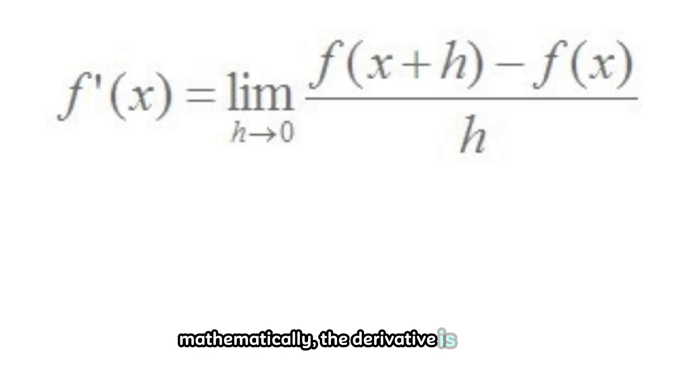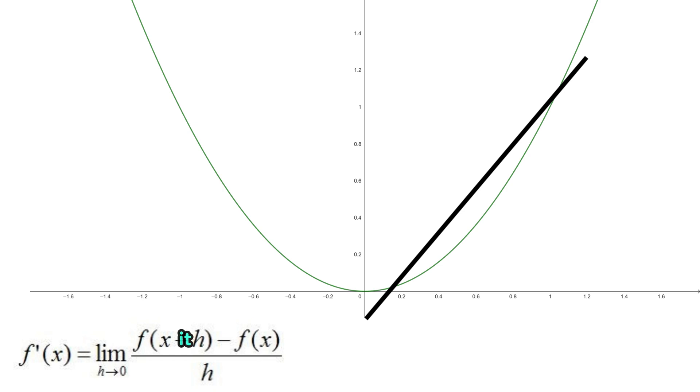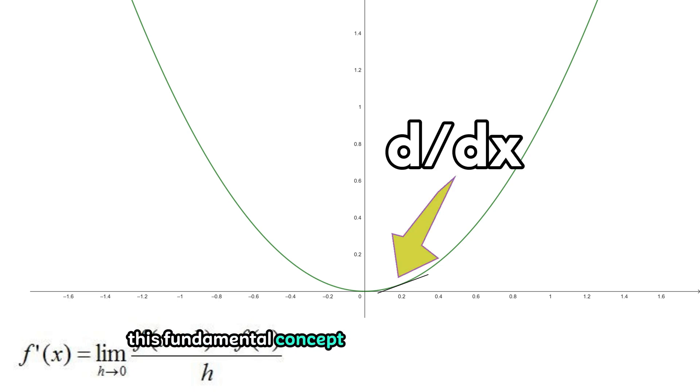Mathematically, the derivative is defined as the limit of the average rate of change as the interval approaches zero. In other words, it quantifies the slope of the tangent line to the curve at a particular point. This fundamental concept lies at the heart of calculus and finds applications in various fields, from physics and engineering to economics and biology.